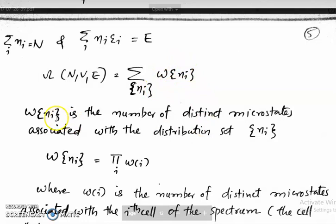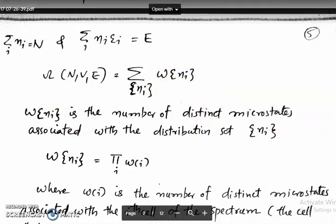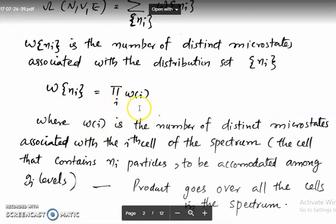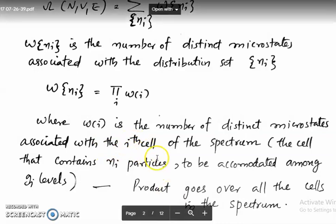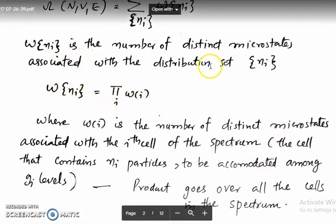W(Ni) is the number of distinct microstates associated with the distribution set Ni. W(Ni) is expressed as a product over i of small w_i, where w_i is the number of distinct microstates associated with the i-th cell of the spectrum — a cell containing Ni particles distributed in g_i levels.